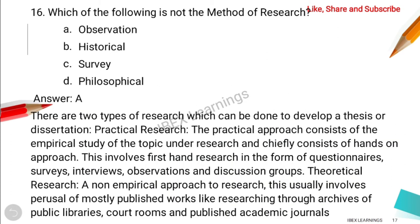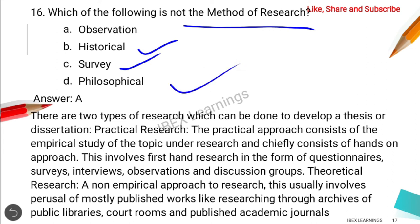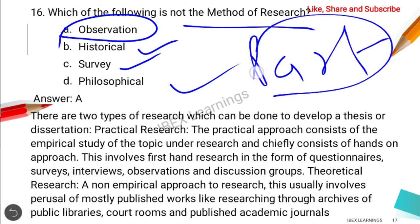The next question is: which of the following is not a method of research? Historical research — we study the history of facts. Survey is also a kind of research. Philosophical is also a kind of research. But observation is a part of research methodology, not a method of research in itself. In practical research, we have questionnaires, surveys, interviews, observations, and discussions involved. So the correct answer is observation.